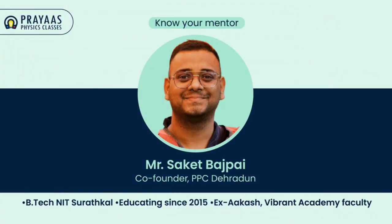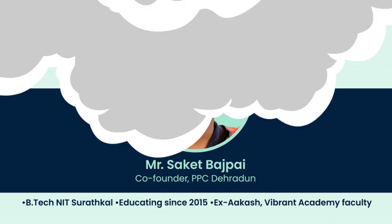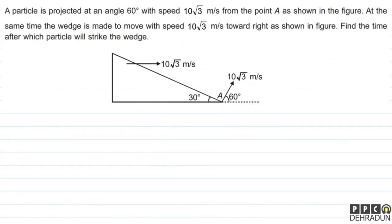Hello everyone, I'm Saket Bhajpayee, co-founder of Preyas Physics Classes, Dehradun. Welcome students. Let's have a look at this beautiful problem. The question says: a particle is projected at an angle of 60 degrees with speed 10√3 meter per second from point A as shown in the figure. At the same time, the wedge is made to move with speed 10√3 meter per second towards the right. Find the time after which the particle will strike the wedge.